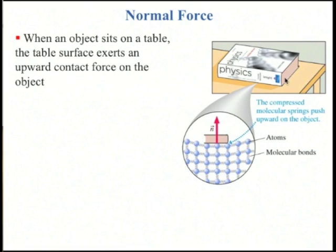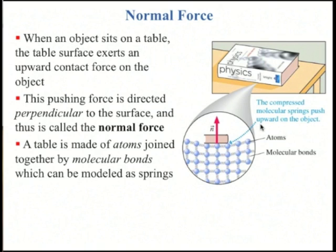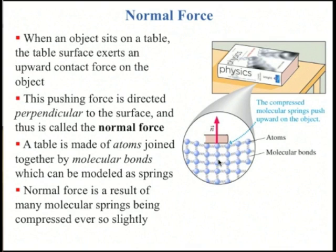The normal force: when an object sits on a table, the table exerts an upward force on the object. This force is perpendicular to the table, and the word for perpendicular when talking about surfaces is 'normal,' so this is called the normal force. Like tension, the microscopic reason for normal force is little springs acting between the atoms. As the book sits on the table, it compresses many tiny springs between the atoms — they're like a spring force — and this pushes upward.